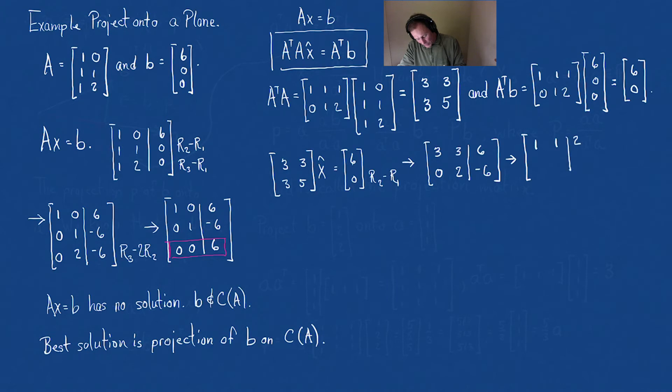Let's solve that. So this just says that x2 hat is minus 3, and it says that x1 hat minus 3 equals 2. In other words, x1 hat is 5.